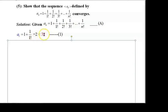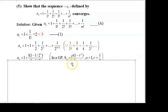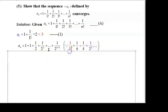We know that 3 > 2, so a₁ = 2 is less than 3. Now we will show that the value of the whole aₙ is also less than 3. aₙ = 1 + 1/1! + 1/2! + 1/3! + ... + 1/n!.